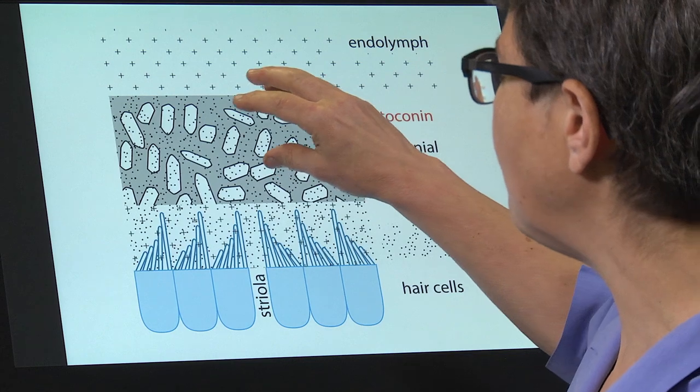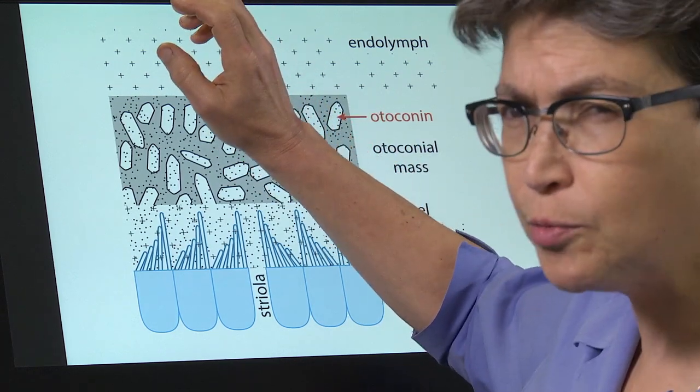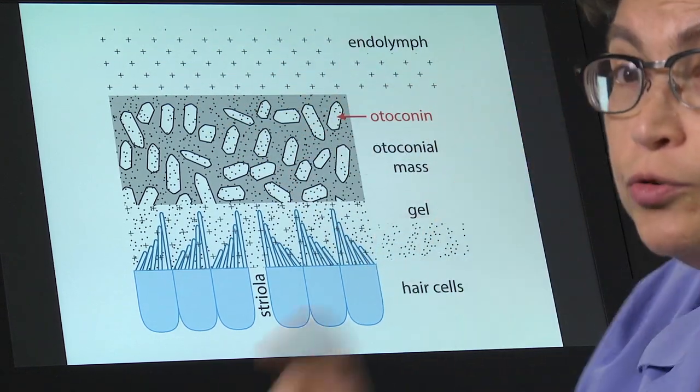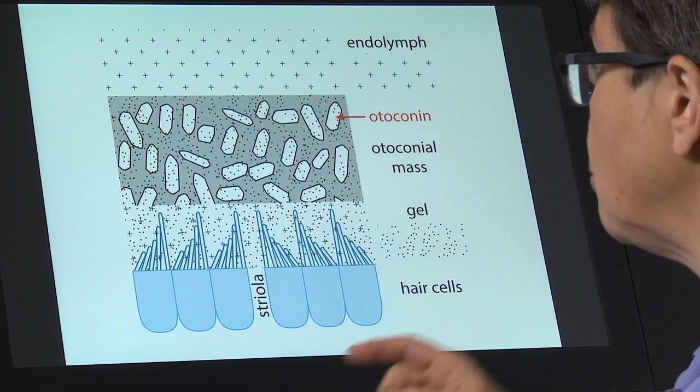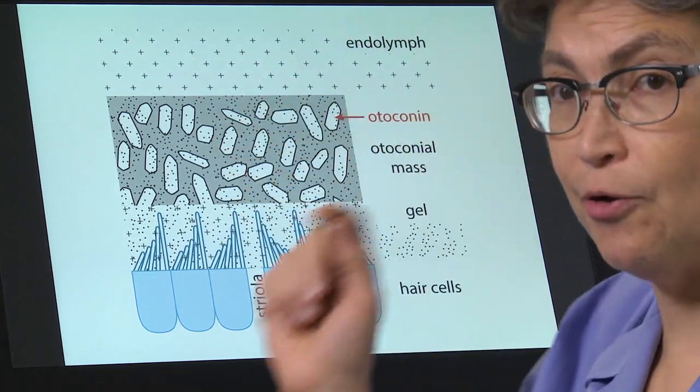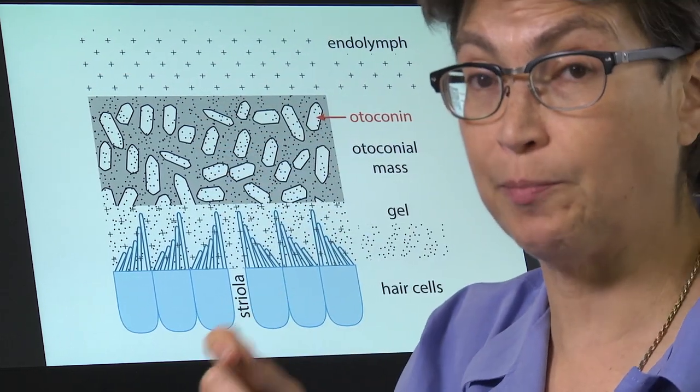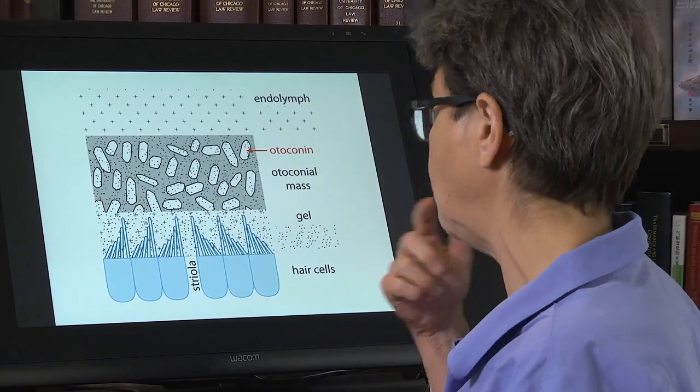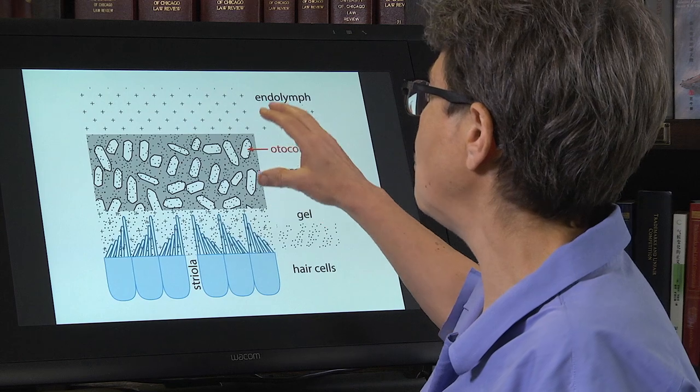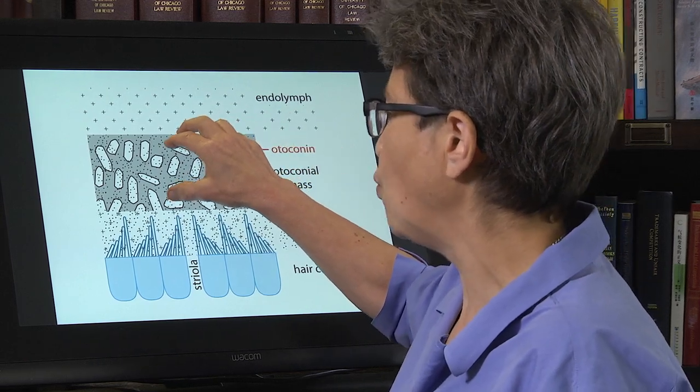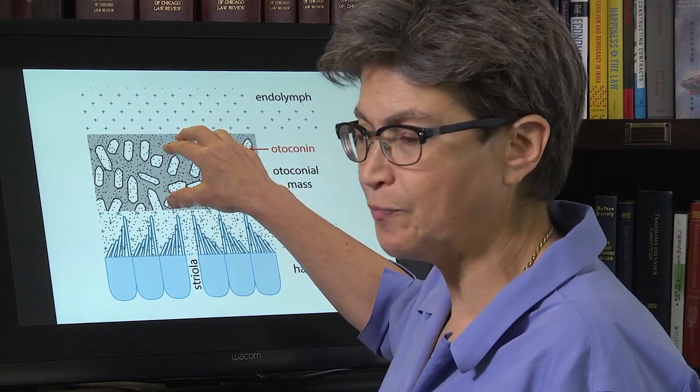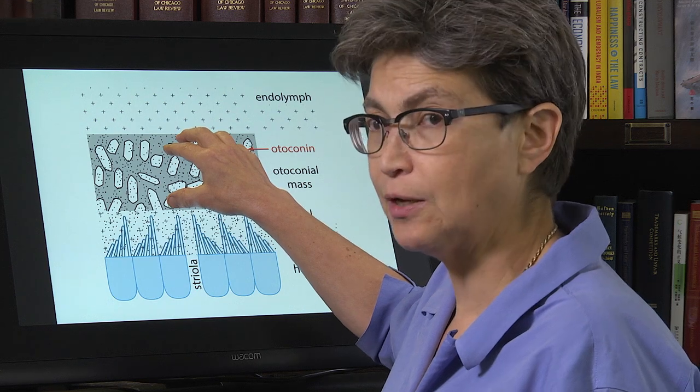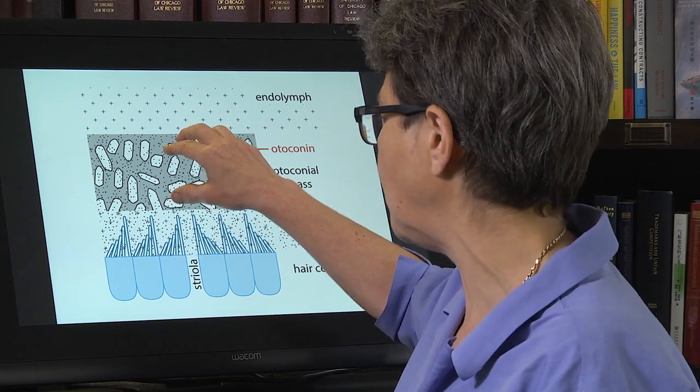There are a lot of proteins in here, and almost all of them are made only during fetal life. So the otoconial mass that you come out with at birth is the one that you have when you're 70, 80, 90 years old or older. So this actually weighs something. It's something substantial that gravity can operate on.